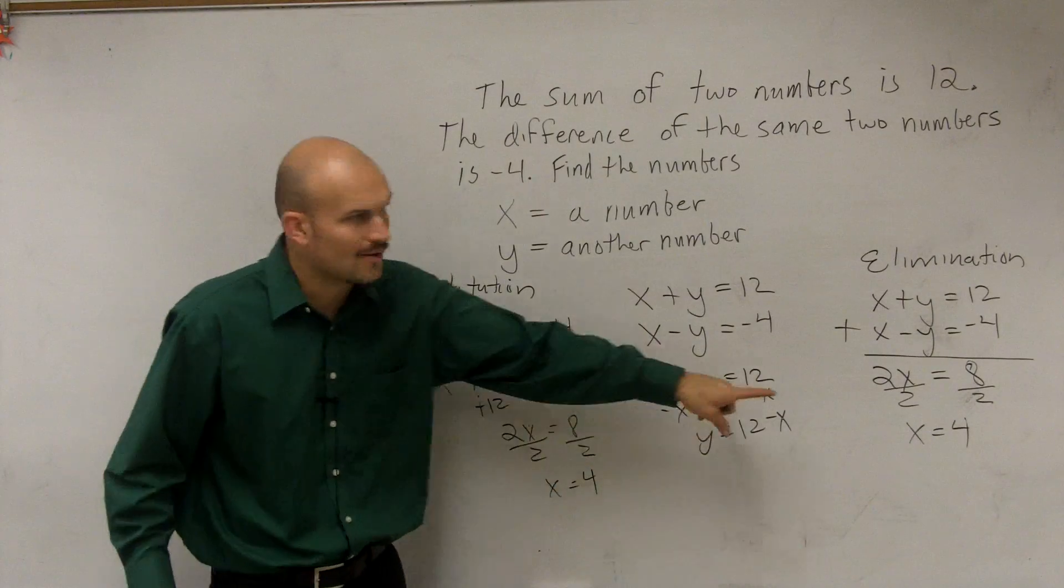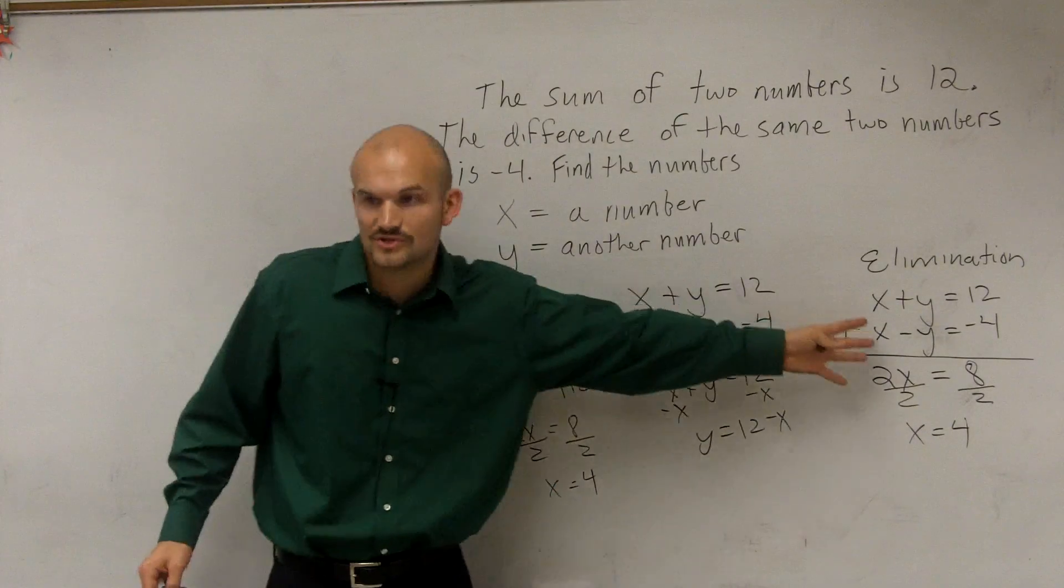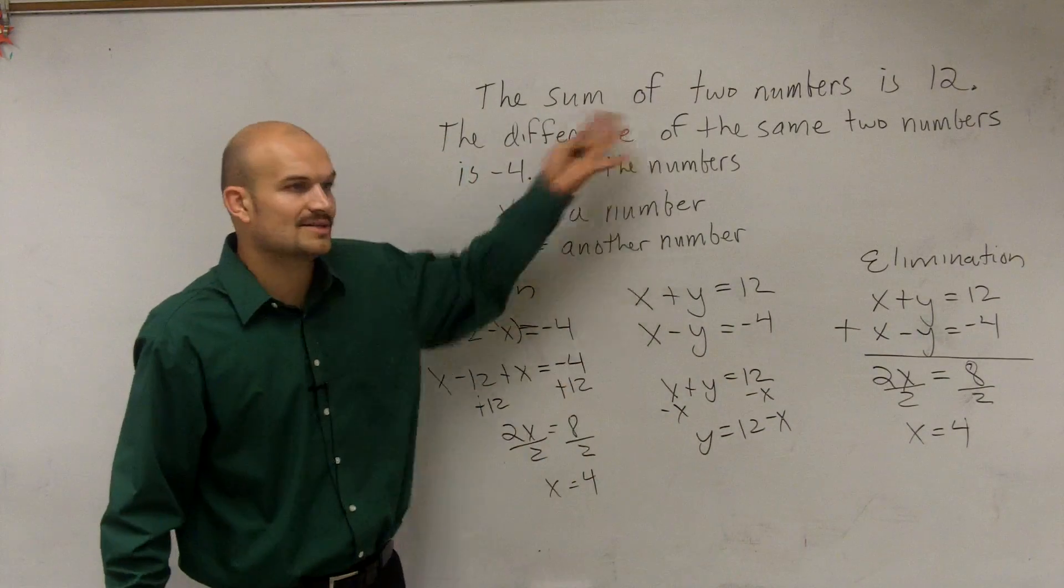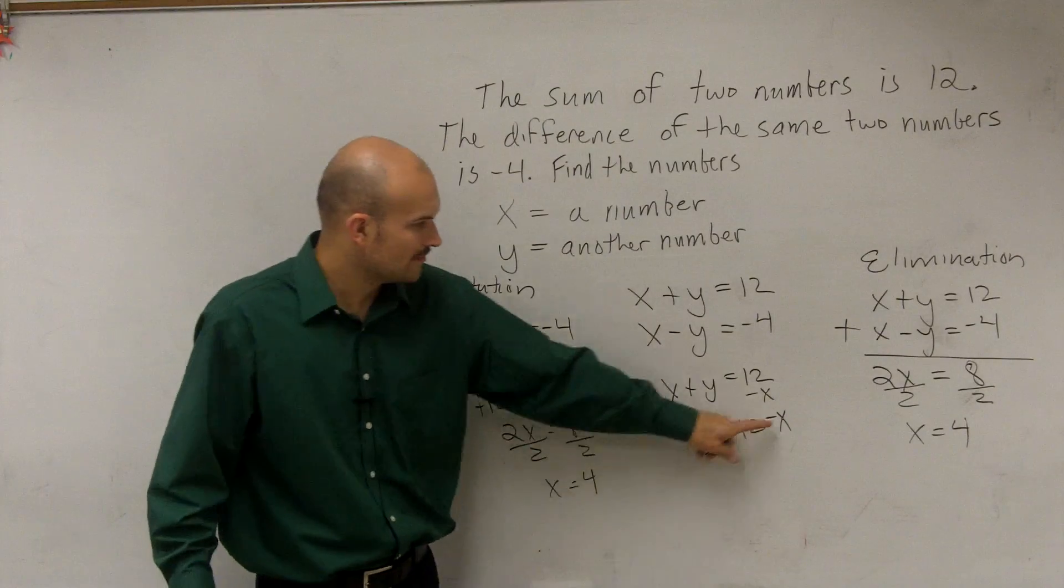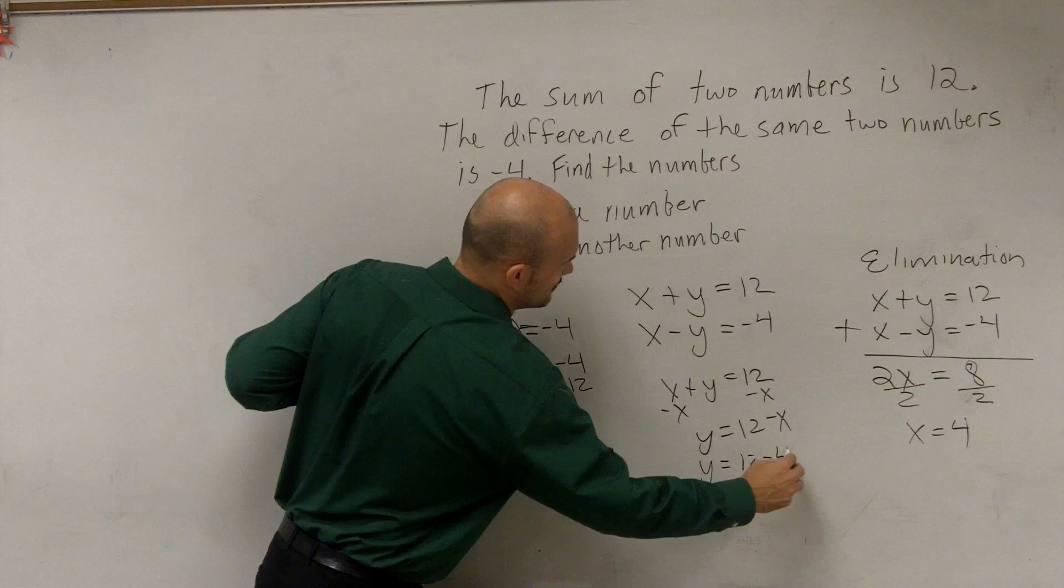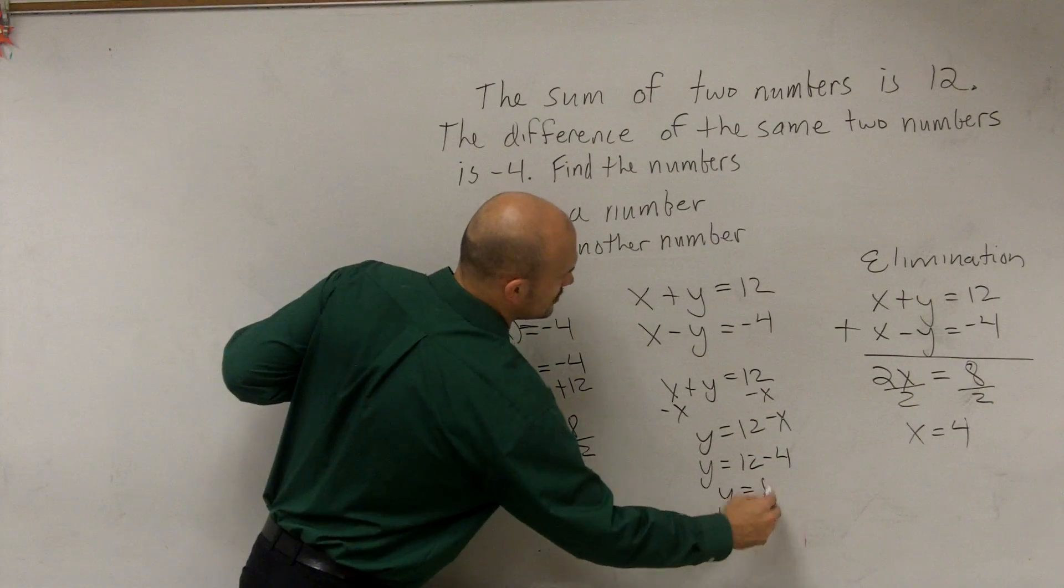Do you guys see how either system you use is going to provide you with the same answer? Then, once you know what x is, plug that into the other equation. So you write x is 4. So y equals 12 minus 4. y equals 8.